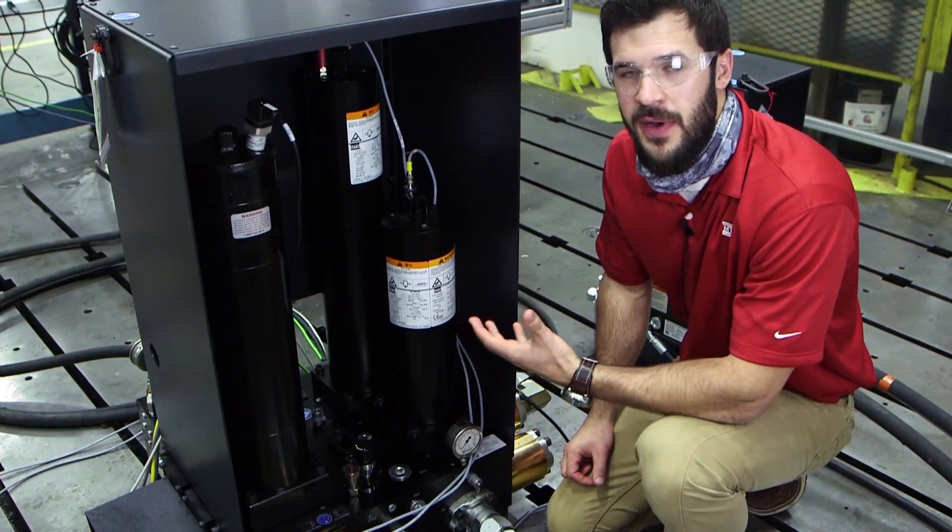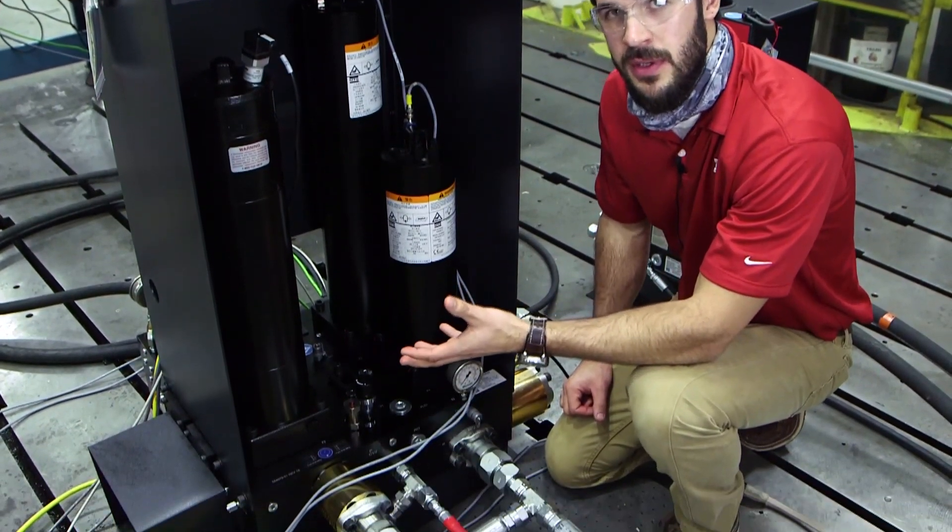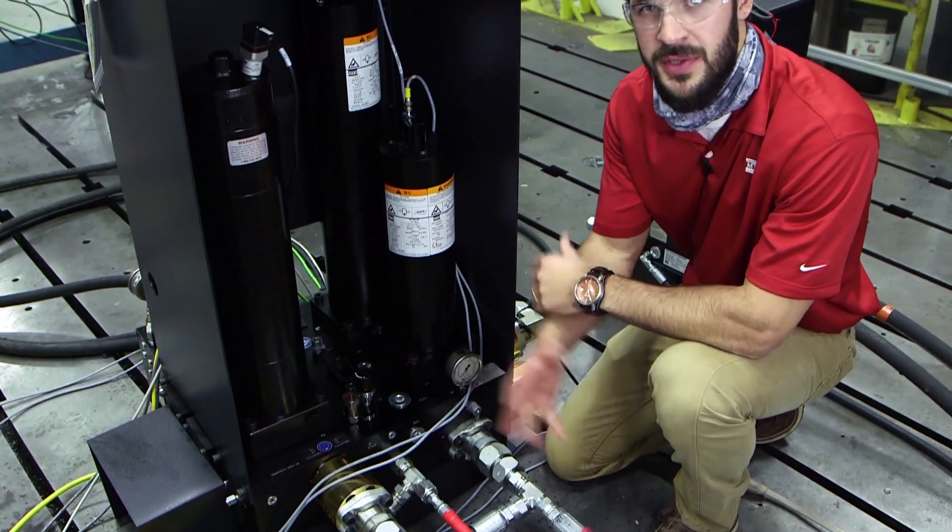So here we are at the back of the 295 HSM. This is where the oil will come in from the high pressure pump that we have on this system. It also returns to the pump.